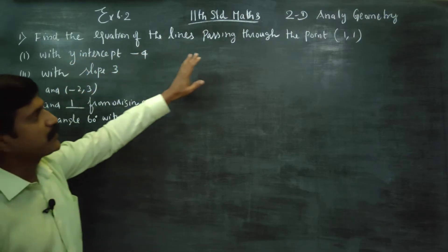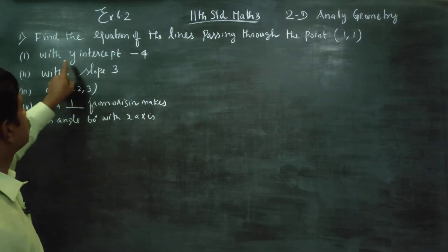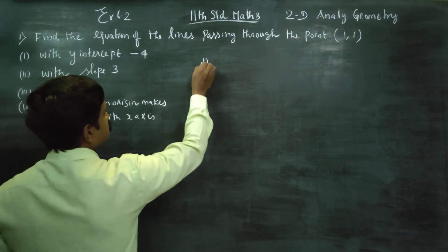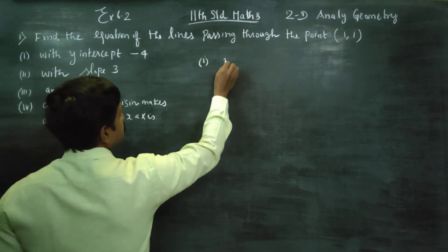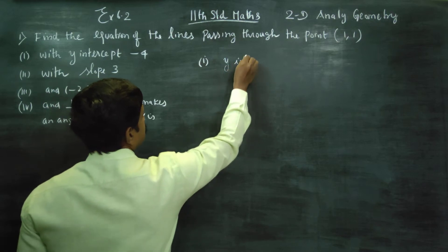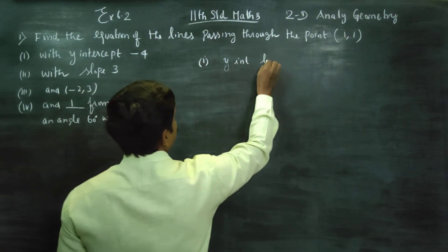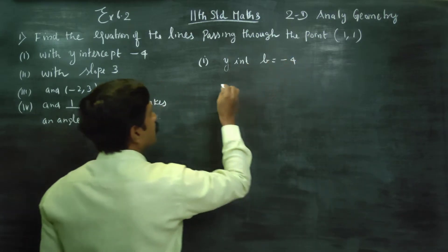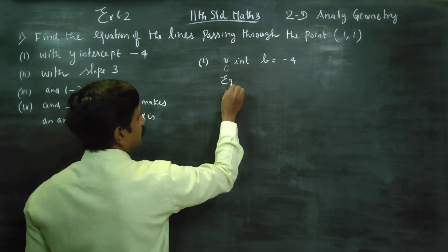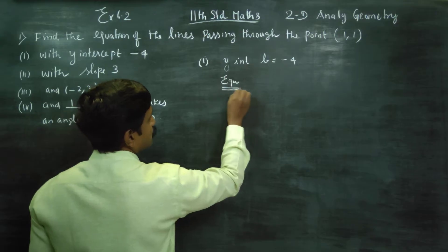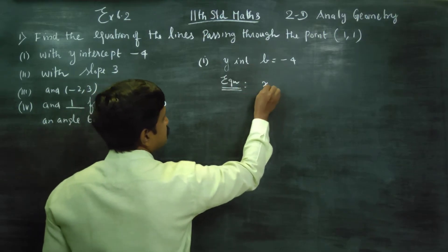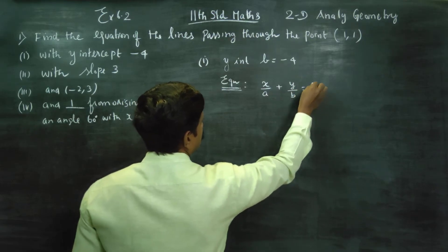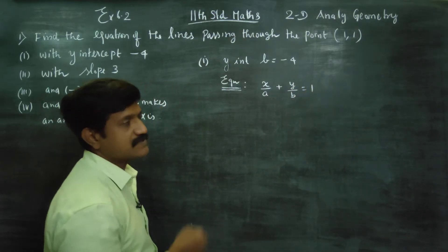Find the equation of the line passing through the point (1, 1) with y-intercept equal to minus 4. Starting my first subdivision: y-intercept, denoted by small letter b, is equal to minus 4. I want the equation of the straight line. The equation of a straight line using x-intercept and y-intercept — the intercept formula from 10th standard.